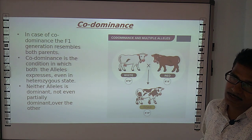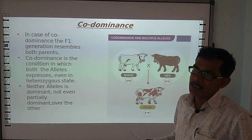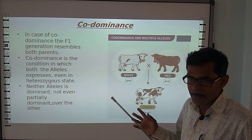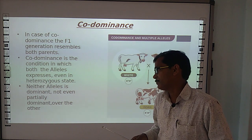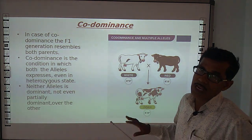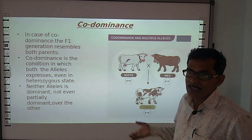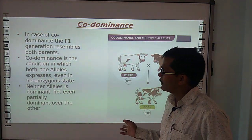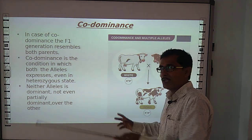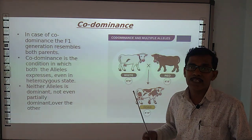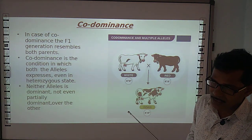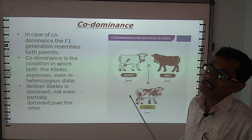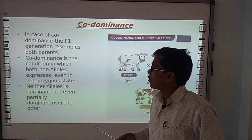Next is co-dominance. In this type of inheritance, neither recessive, nor dominant, nor intermediate characters are expressed. Each allele expresses itself simultaneously in both F1 and F2 generations. Co-dominance is the condition in which both alleles express themselves simultaneously. Neither allele is dominant, nor even partially dominant over the other. So it is called co-dominance.